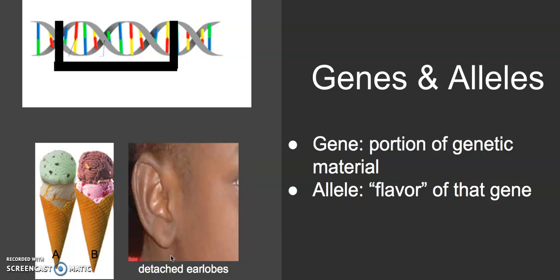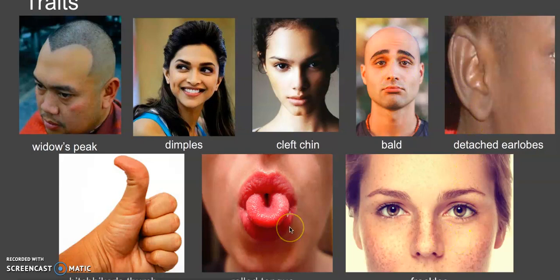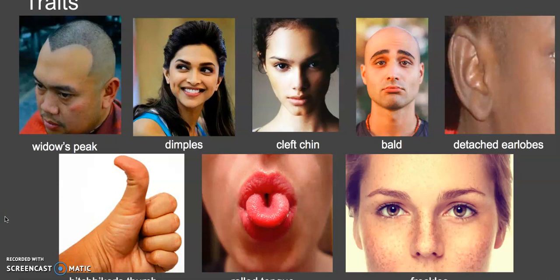Every person has a unique mix of alleles, except for identical twins, and this is how we see our genes coded into traits. Some more traits include a widow's peak, a rounded hairline, dimples, a cleft chin, baldness, detached earlobes, freckles, rolled tongue versus a flat tongue, or a hitchhiker's thumb. It's not quite as simple as just inheriting one from mom and one from dad and mixing them up — there's a bit more complexity to it, which we'll talk about more next week.